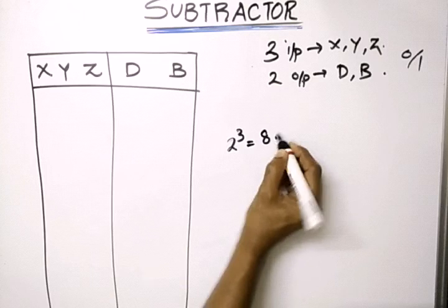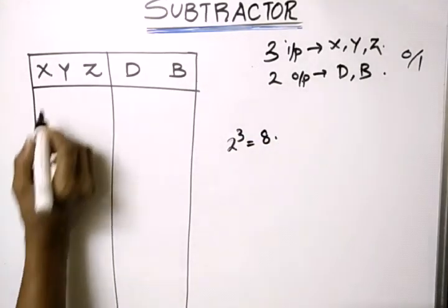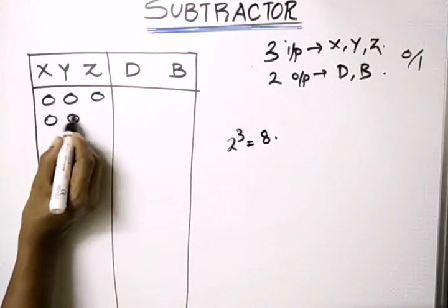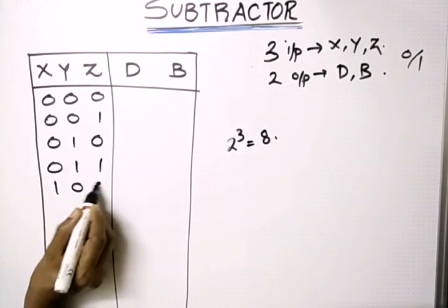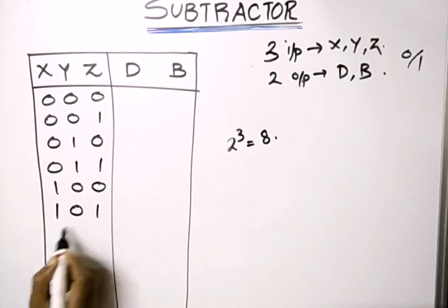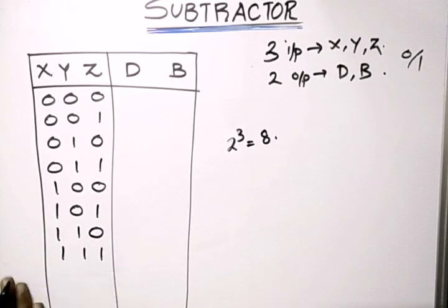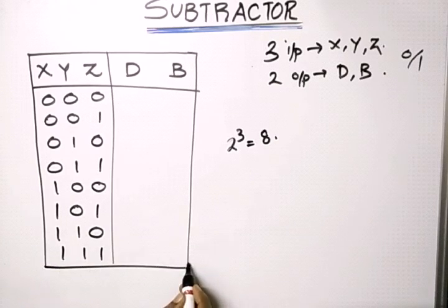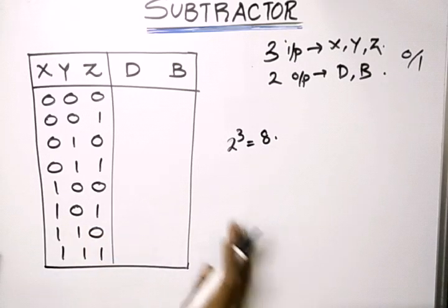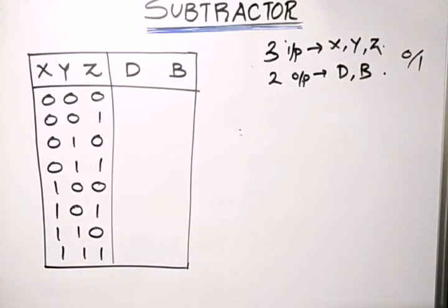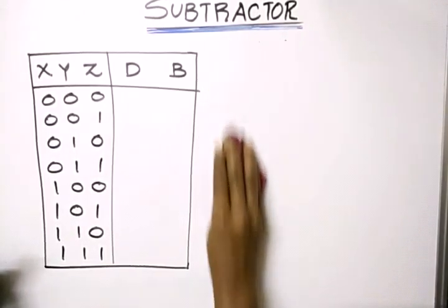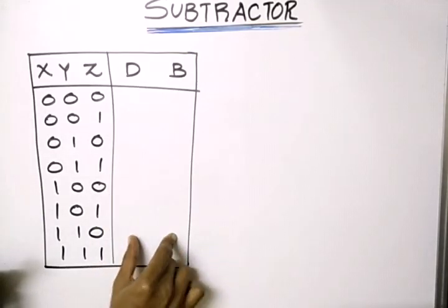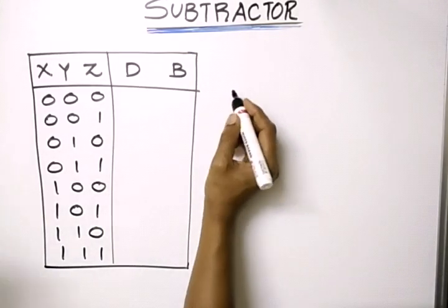Using the three-bit combinations, we can represent 2 raised to 3, that is eight combinations on the input side: 0 0 0, 0 0 1, 0 1 0, 0 1 1, 1 0 0, 1 0 1, 1 1 0, and 1 1 1. These are the eight input combinations possible for a full subtractor. The corresponding difference and borrow values are represented in the output columns.